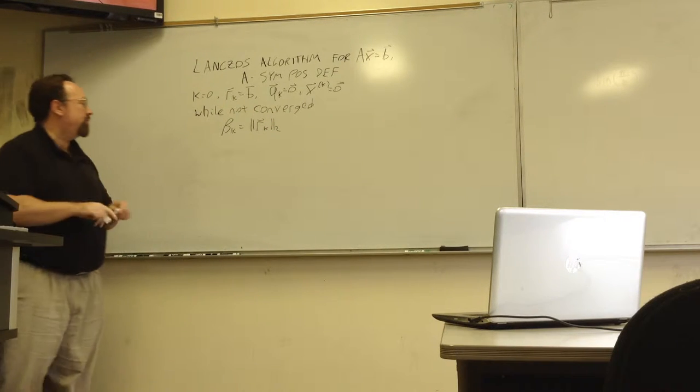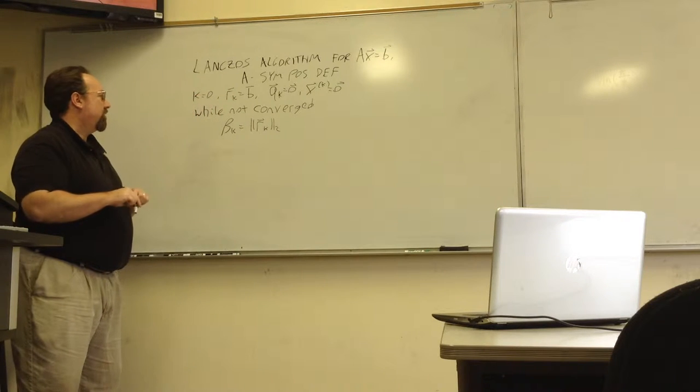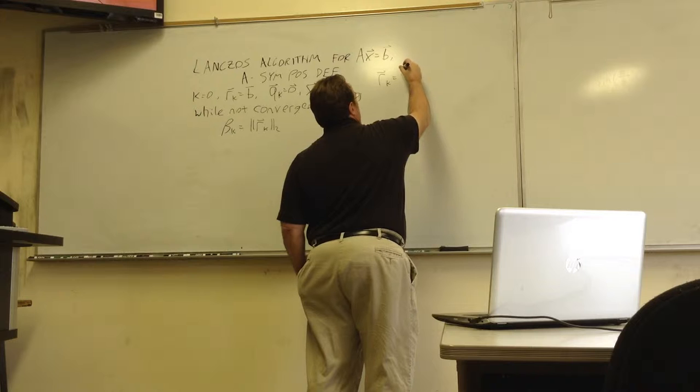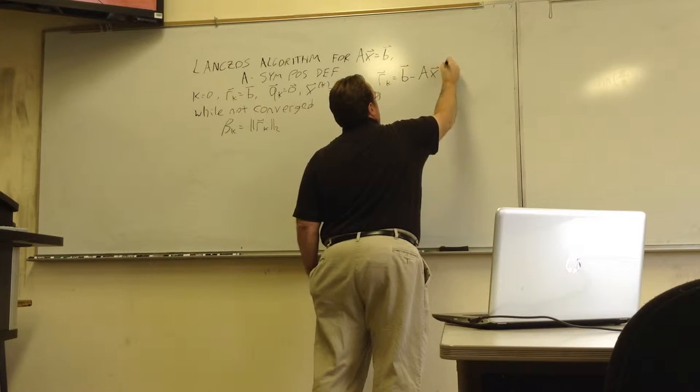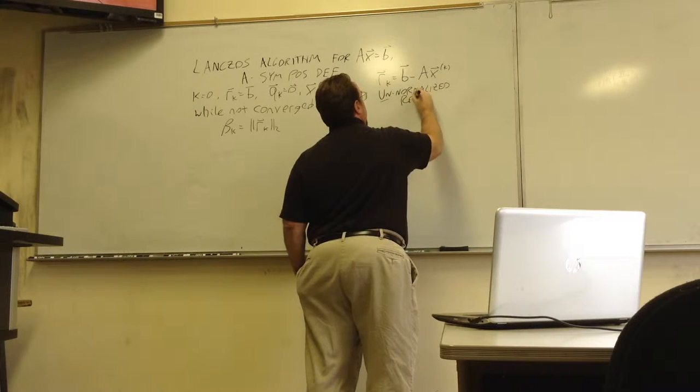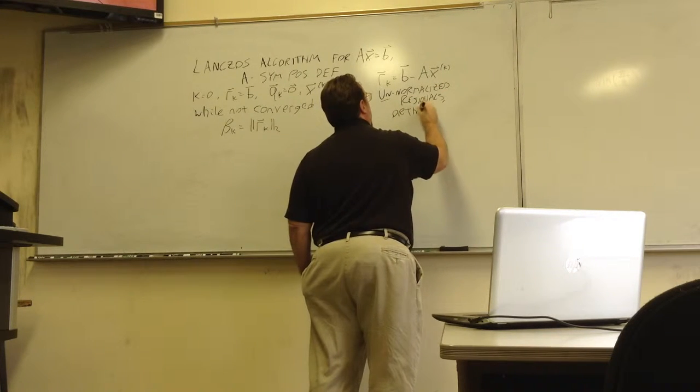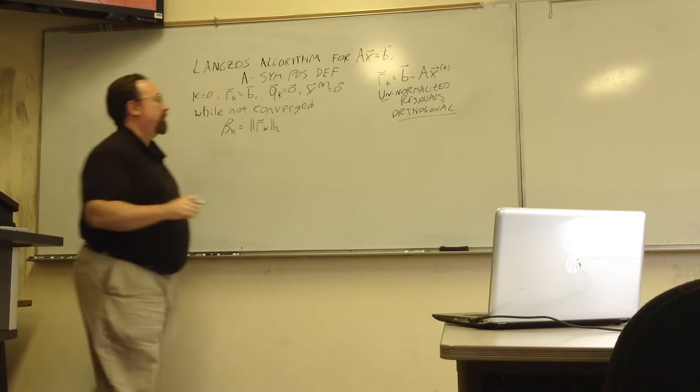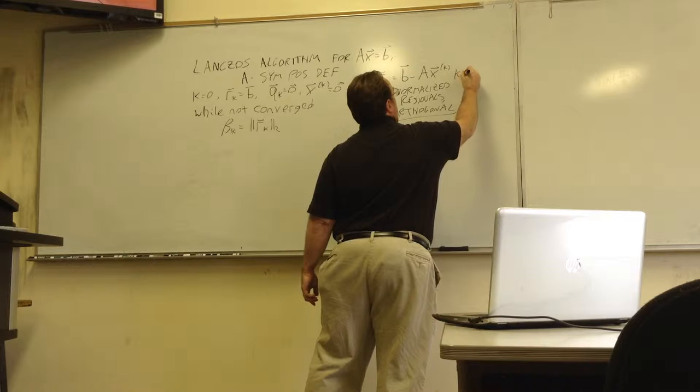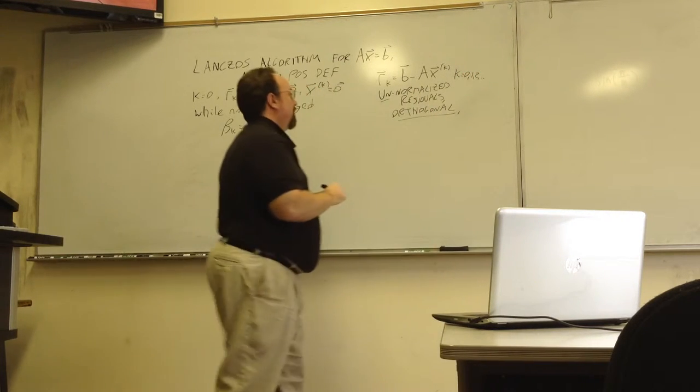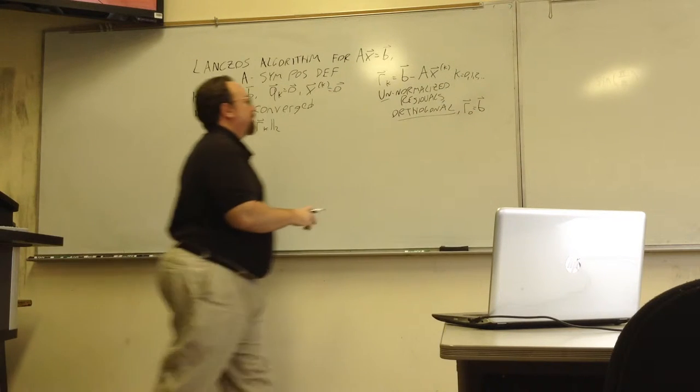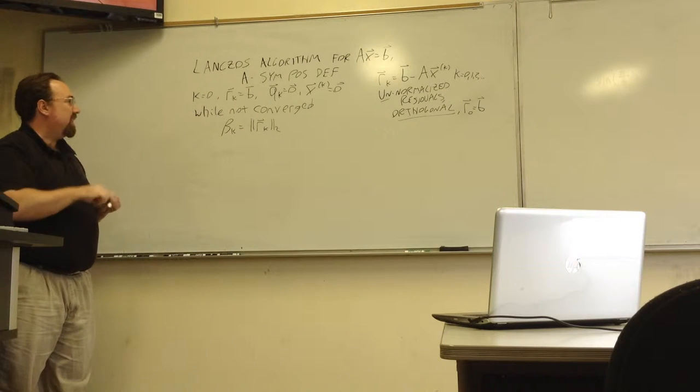We really have two sequences of vectors going, the Qs and the Rs. RK effectively is B minus AXK, so these are the unnormalized residuals. And they are constructed in such a way as to be orthogonal, but they're not unit vectors, so we want them orthonormal. These are indexed starting at zero, and the first residual R0 is just going to be equal to B.